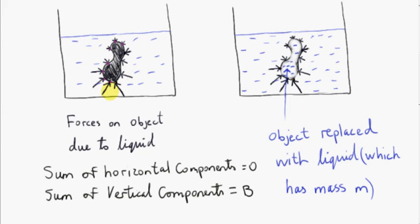We are going to consider the sum of all the forces on the object due to the liquid. Let's consider the sum of the horizontal components. This object is supposed to have horizontal equilibrium, so it's not moving right or left, meaning the sum of the horizontal components must be zero. You can see some vectors on the right have horizontal components pointing to the left, and vectors on the left have horizontal components pointing to the right. If you sum them all up — not just in this cross section but in all cross sections — you get zero.